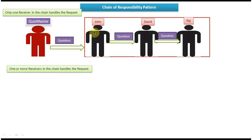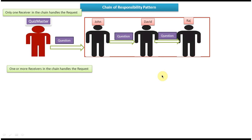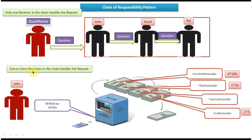Suppose the quiz master asks a question and John knows the answer — he tells the answer to the quiz master, and the question stops there. John won't pass it to the next person. But if John doesn't know the answer, he will pass the question to the second person in the chain, which is David. If David knows the answer, he will answer it and it ends there — David won't pass it to the next person.